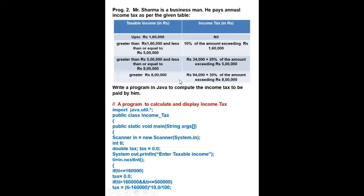Then double tax — because when we find the income tax we divide by 100, so the value comes in decimal, so we take it as double. tax = 0.0. Now for this program, first we enter the taxable income: System.out.println("Enter taxable income"). Then ti = in.nextInt(). Now curly bracket start, and we will put conditions according to the program.